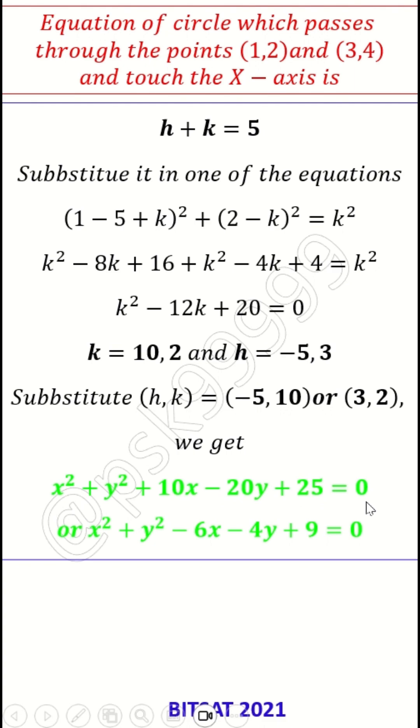and x² + y² - 6x - 4y + 9 = 0. These two are the solutions.